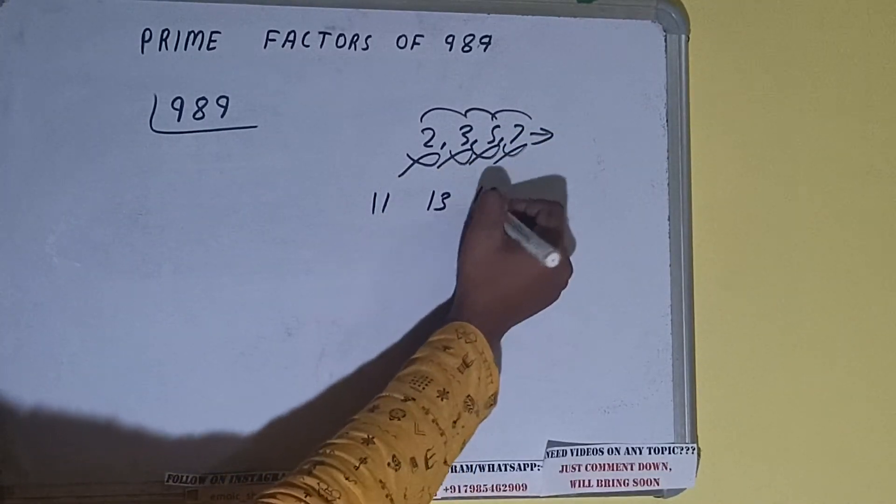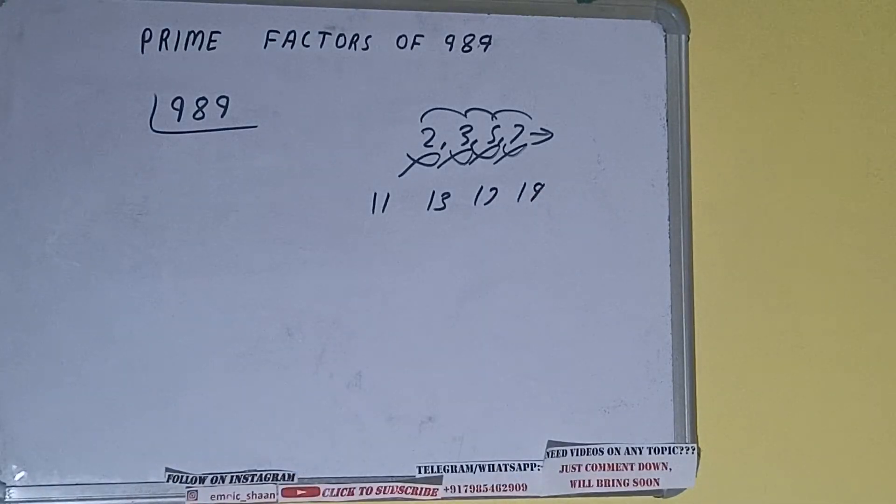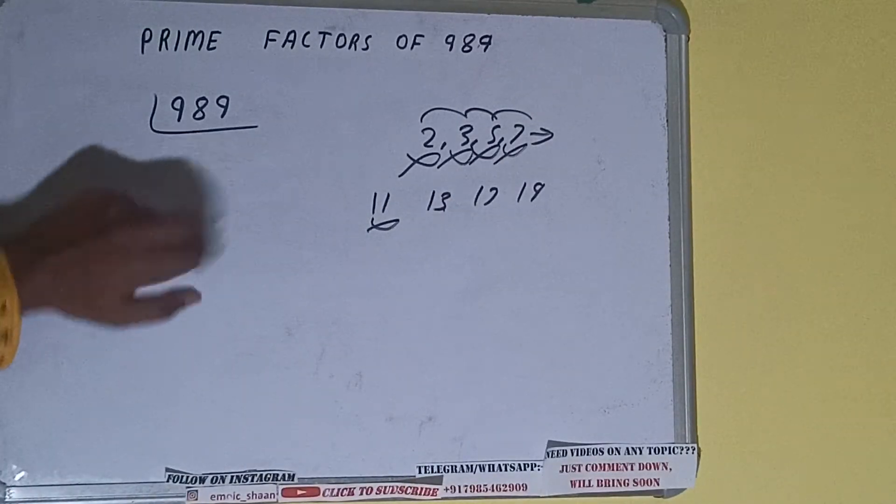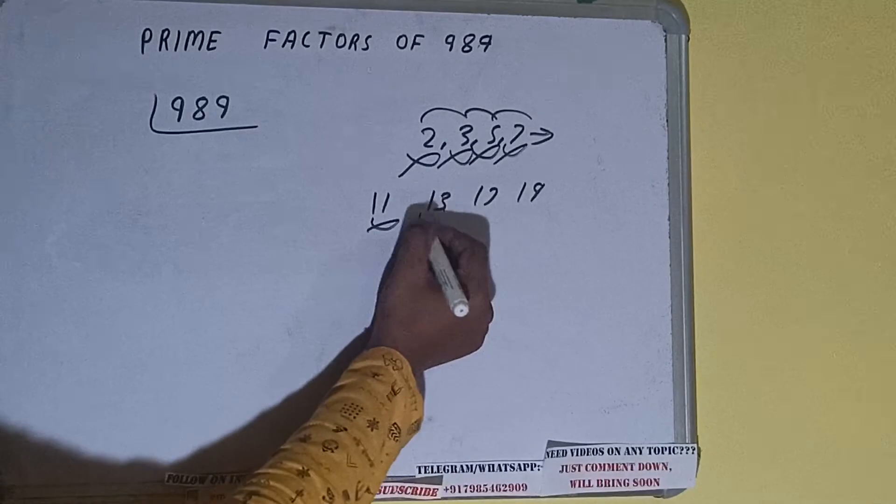Let's check with 11, 13, 17, and 19. 11, 8, 88, 1, 0, 9—with 11 also not divisible. Let's check with 13. 13, 7, 91, 7, 9—with 13 also not divisible.